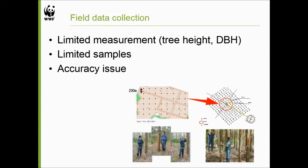What we can do for a forest is go to the field to measure the trees. But of course there are some limited measurements — tree height, DBH — to estimate stem volume. And the sample sizes are limited too. We cannot measure a huge forest by ourselves, so we usually use statistical techniques to estimate the entire forest based on limited samples. Accuracy is also an issue — human measurement has human error associated with it. I want to introduce some 3D techniques today to reduce human error.